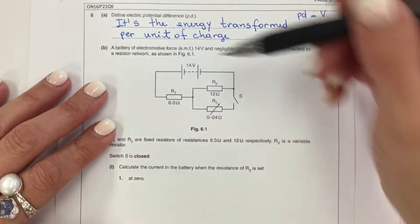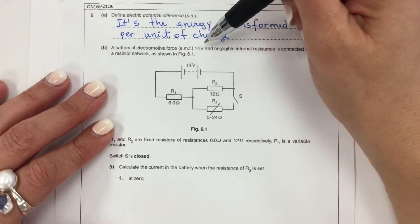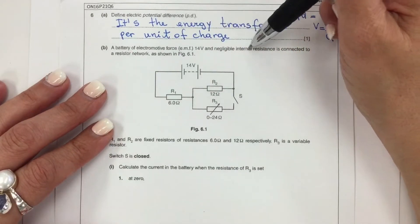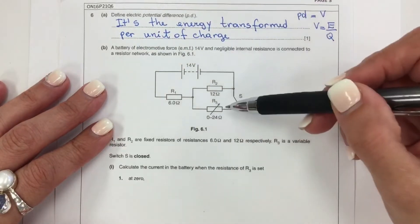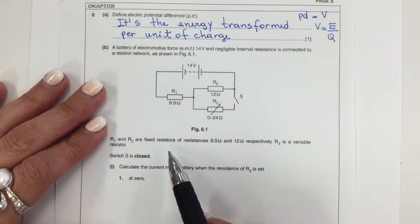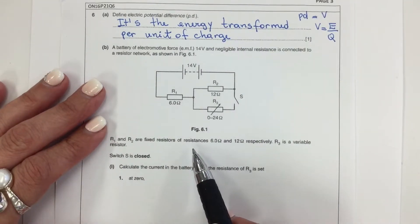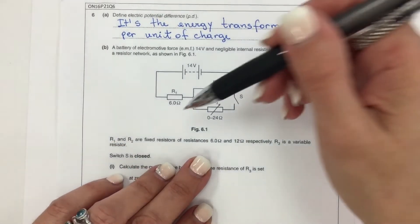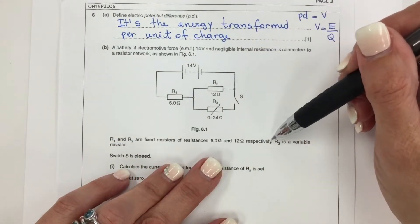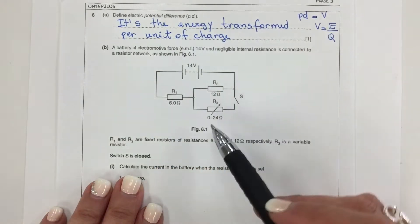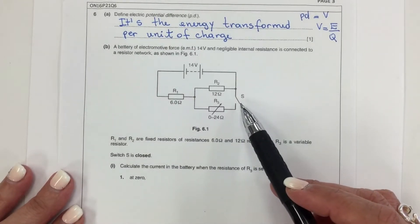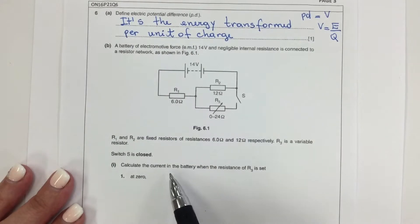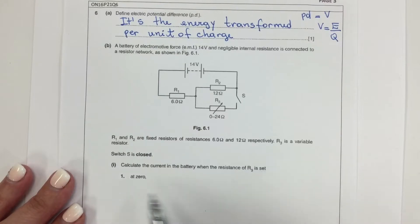Part B. A battery of electromotive force, EMF, of 14 volts with negligible internal resistance is connected to a resistor network as shown in this picture. R1 and R2 are fixed resistors of resistances 6 ohms and 12 ohms respectively, and R3 is a variable resistor. The switch is closed. Calculate the current in the battery when the resistance of R3 is set at zero.